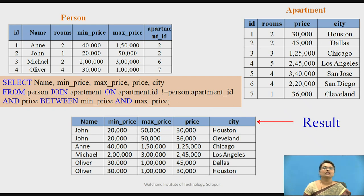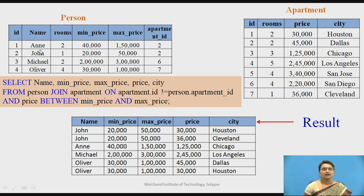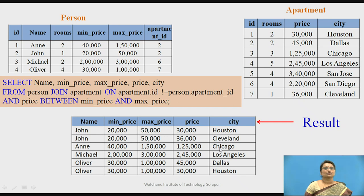The result shows data where apartment ID does not equal person's apartment ID, and price is between minimum and maximum price. For person NA with apartment ID 2, we do not take apartment ID 2 — we take other apartment data. For one record, the price 30,000 falls between the minimum and maximum, so that data comes through. The record with ID 2 will not come because it is matching. And for three, the condition is satisfied, so it comes through as well.